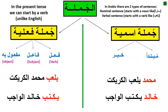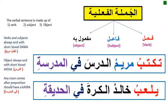For example: يلعب محمد الكريكت, or يكتب خالد الواجب. The verbal sentence is made up of verb, subject, and object: الجملة الفعلية تتكون من فعل، فاعل، ومفعول به. فعل means verb, فاعل means subject, مفعول به means object. For example: تكتب مريم الدرسة في المدرسة.